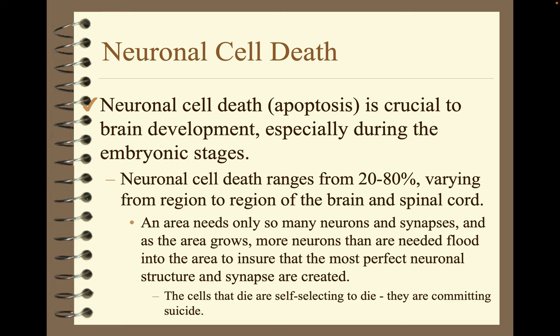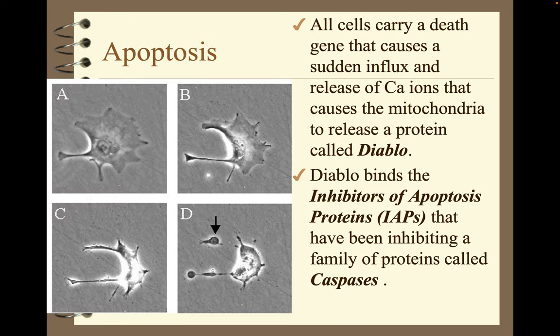Neuronal cell death, or apoptosis, is crucial to brain development, especially during the embryonic stages. Neuronal cell death ranges from 20 to 80 percent, varying by region of the brain and spinal cord. An area needs only so many neurons and synapses, and as the area grows, more neurons than needed flood in to ensure the most perfect neuronal structure and synapse are created. The cells that die are self-selecting — they are committing suicide. All cells carry a death gene that causes a sudden influx and release of calcium ions, causing the mitochondria to release a protein called Diablo — Spanish for devil.